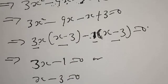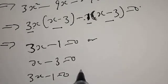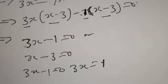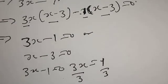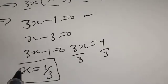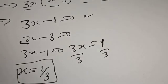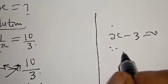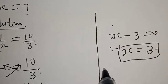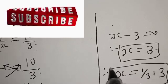This implies either 3x minus 1 is equal to 0, or x minus 3 is equal to 0. From the first case, 3x equals 1, so dividing both sides by 3 gives x equal to 1 over 3. From the second case, x minus 3 equals 0, therefore x equals 3. So the values of x are 1 over 3 and 3.